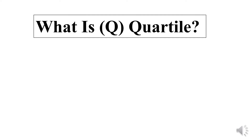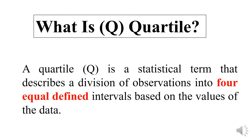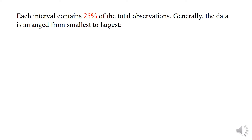What is a quartile? A quartile is a statistical term that describes a division of observations into four equal defined intervals, based on the values of the data. Each interval contains 25% of the total observations. Generally, the data is arranged from smallest to largest.